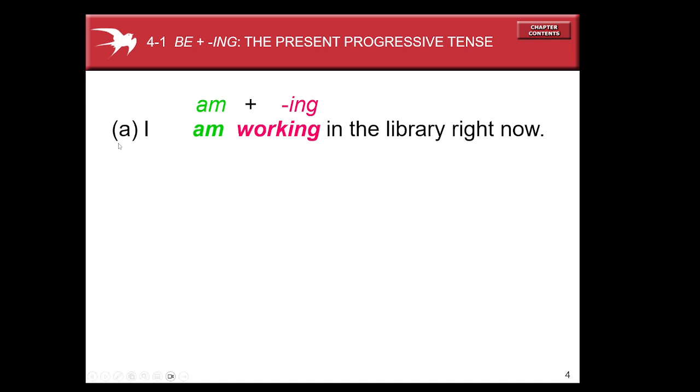Basically we use the verb to be in present plus a verb and then we add the suffix -ing. In this example we can see it in a better well-known form in positive. In letter A it says I am working in the library right now. As I said before it expresses that this activity is happening at the time of speaking. In other words I can see the action so I can describe it.